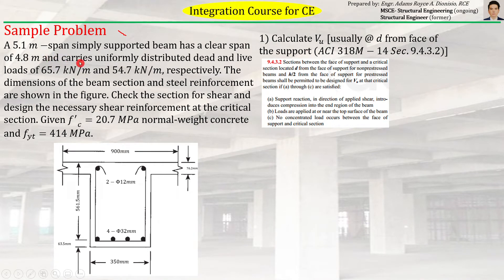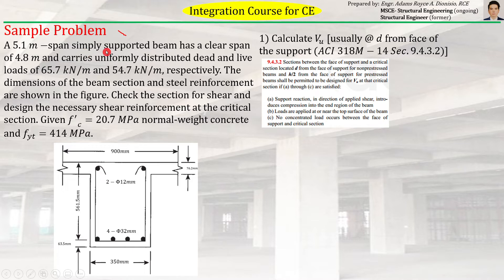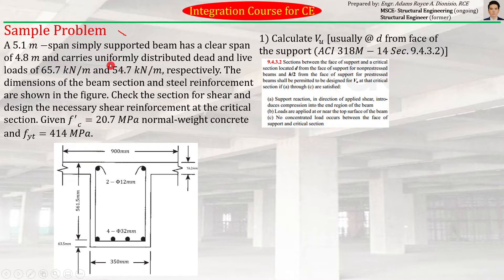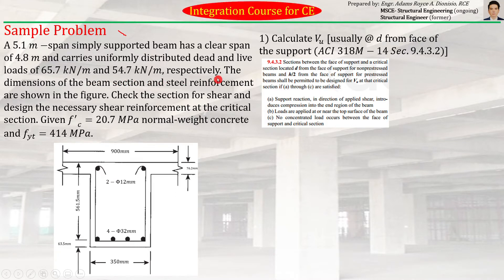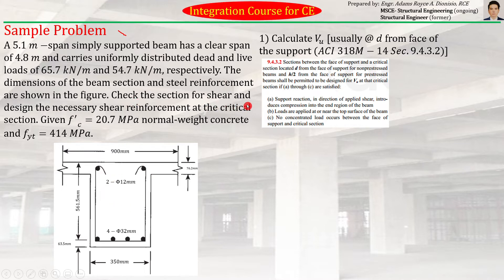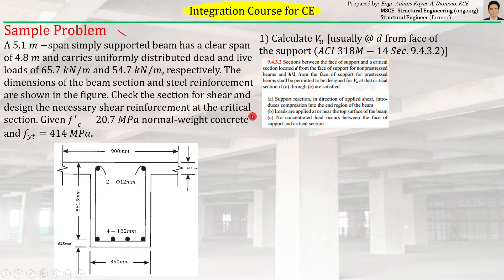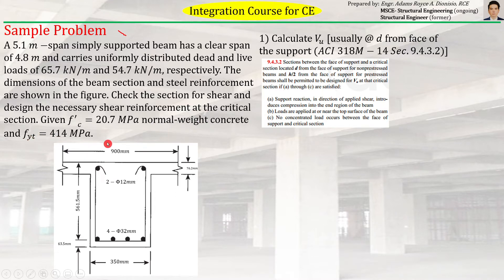Let's try to answer this sample problem related to shear reinforcement. A 5.1-meter span simply supported beam has a clear span of 4.8 meters and carries uniformly distributed dead and live loads of 65.7 kN/m and 54.7 kN/m respectively. Check the section for shear and design the necessary shear reinforcement at the critical section. Given: FC prime = 20.7 MPa, normal weight concrete, and FYT = 414 MPa.